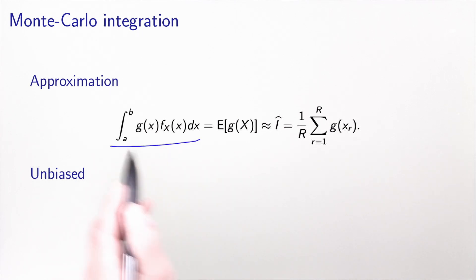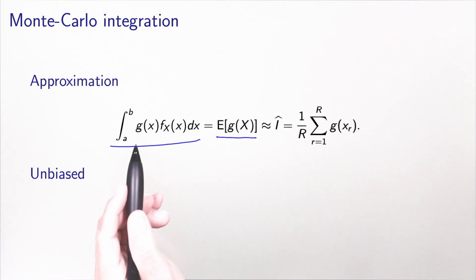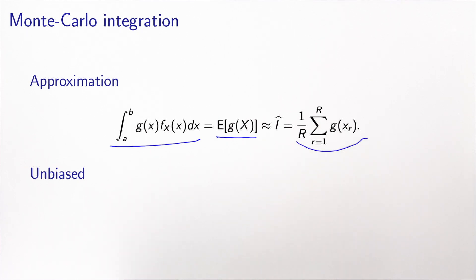There are two important things to remember with Monte Carlo integration. One is that you can easily generate draws and calculate an approximation of the integral by applying the function and calculating the mean. But two is that what you obtain is just an approximation. We wanted to calculate this integral and we consider it as the expectation of a transform of a random variable X. We approximate this integral by calculating the empirical mean of transforms of draws from this random variable, which we will denote by I hat.